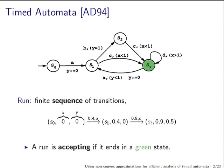This reset allows you to measure time duration between events. A run of a timed automaton is just a finite sequence of transitions — we are interested only in finite sequences of transitions.